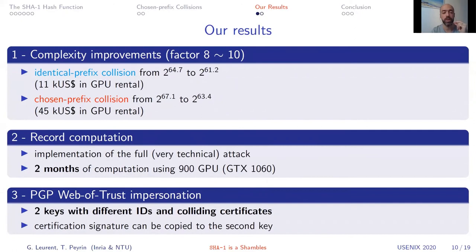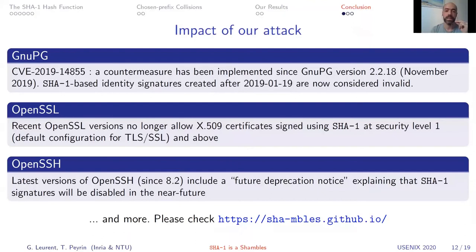We have three results in this paper. First, we improve the collision attack — including the identical prefix collision attack — by a factor of roughly eight to ten, and similarly improve the chosen prefix collision compared to our previous paper with Gaëtan. Second, we actually conducted the computation. It is a very technical attack with many phases that interact with each other, and while practical, it is costly. We implemented this on GPUs, requiring about two months of computation on a cluster of 900 GPUs. Third, we applied the attack to the PGP web of trust, providing an impersonation attack.